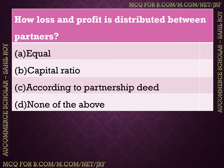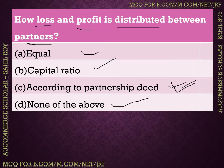The next question: how is loss and profit distributed among partners? Options: (A) equally, (B) capital ratio, (C) according to partnership deed, (D) none of the above. The correct answer is Option C — according to partnership deed. If the question had specified 'in the absence of a partnership deed,' then it would be equally; but generally, distribution is as per the partnership deed.